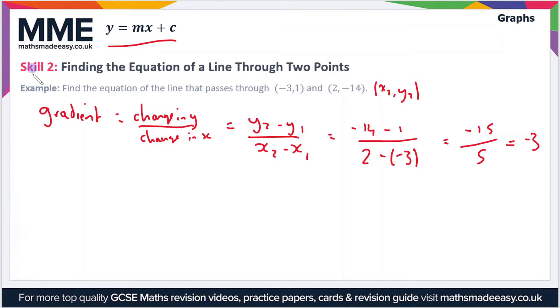This gradient is our value for m, so m is therefore minus 3. This equation that we have at the top, y equals mx plus c, let's now rewrite as y equals minus 3x plus c.